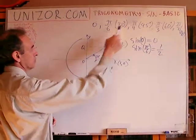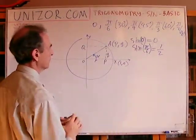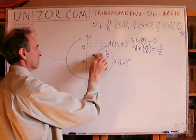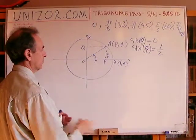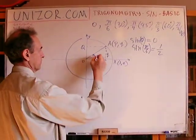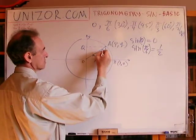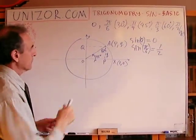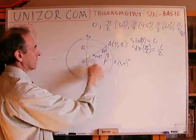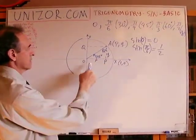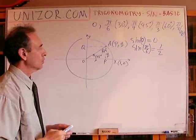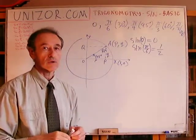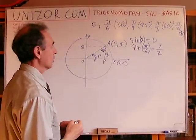Next. π over 4. Let's consider this angle 45 degrees. Well, then, obviously, this is also 45 degrees, right? So we are talking about the right triangle with two catheti congruent to each other. So P is equal to Q.